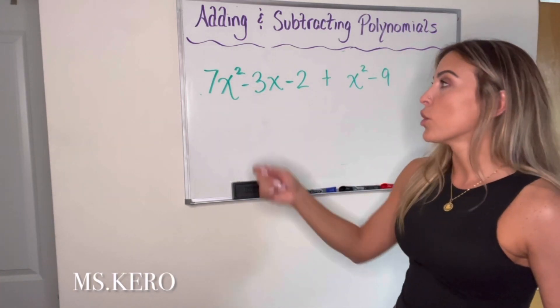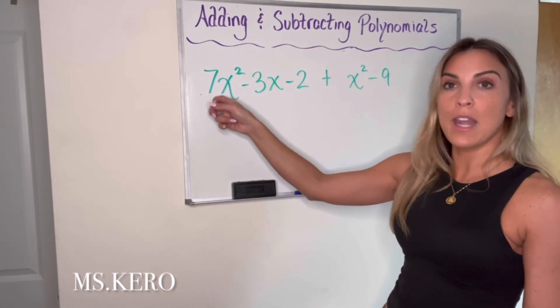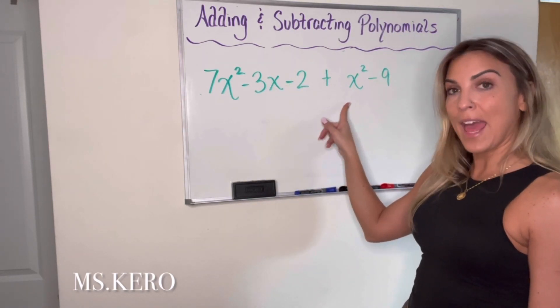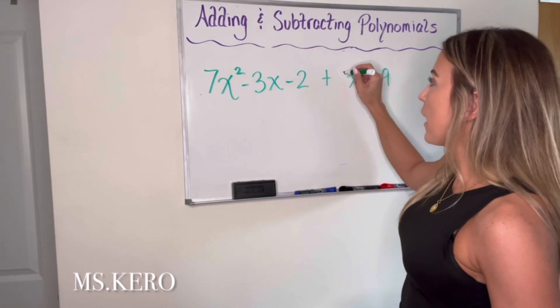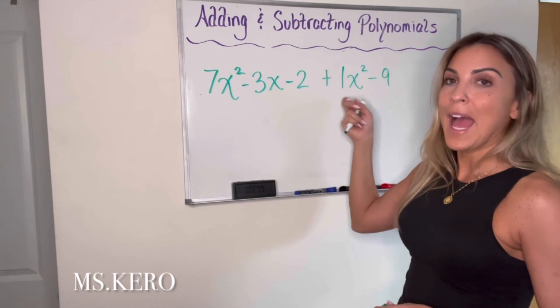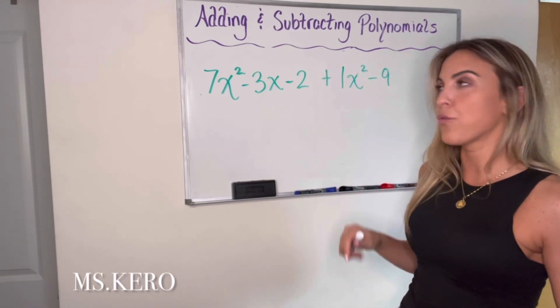Now I'm just looking for like terms. So like I told you guys, we're looking for something else that has an x squared. So 7x squared can be combined with the x squared. And that x squared is the same thing as a 1x squared, right? Because if I multiply a term by 1, I still just get that term. So I haven't changed the value of this by placing a 1 in front of it.